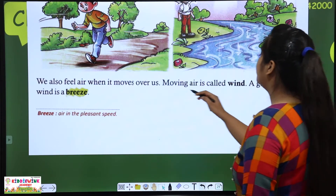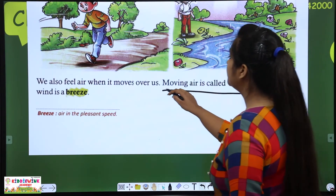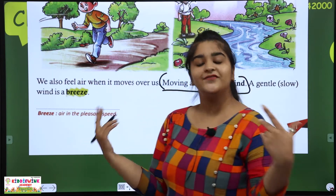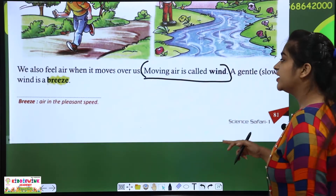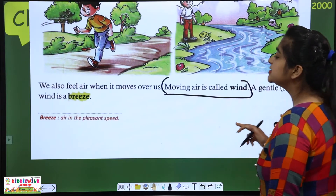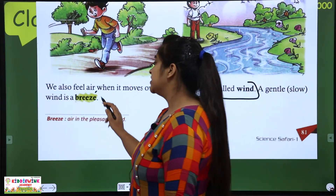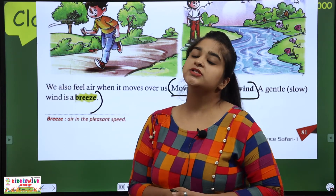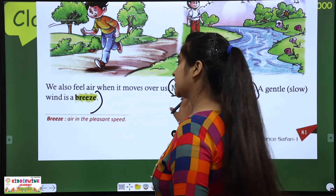Moving air is called wind. So moving air is called wind. A gentle, slow wind is called a breeze. Gentle, slow means the wind that moves a little bit — we call that a breeze.